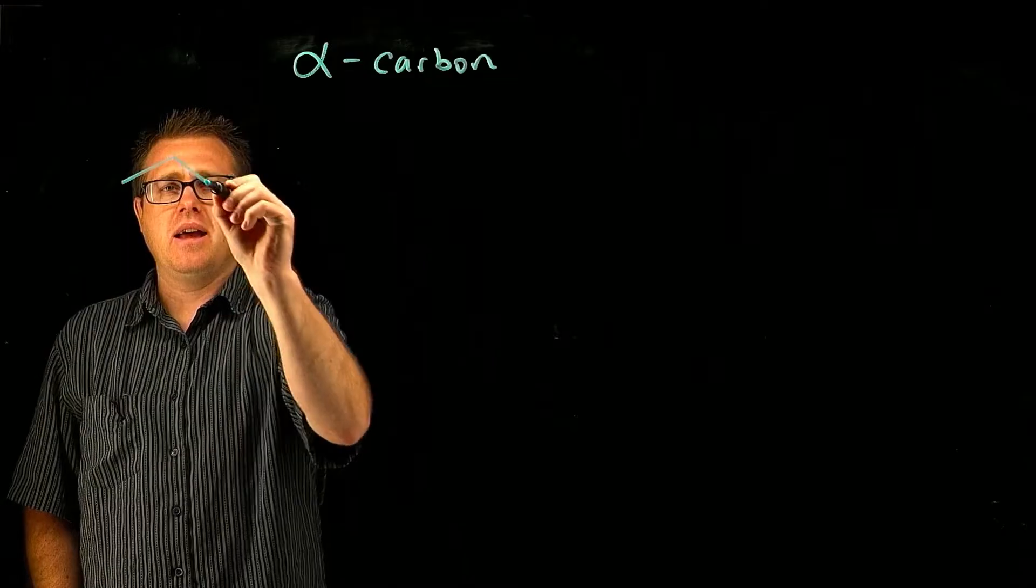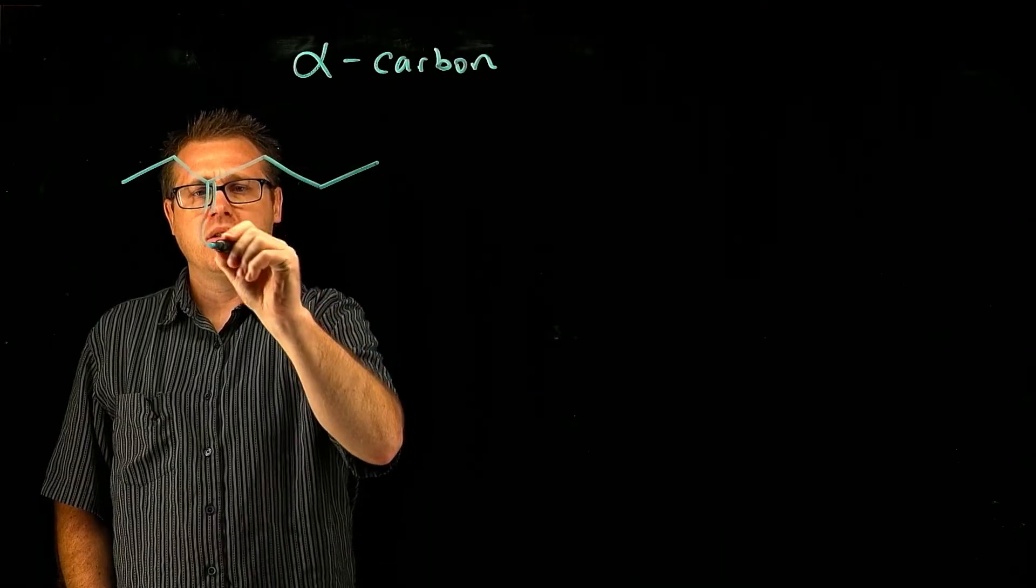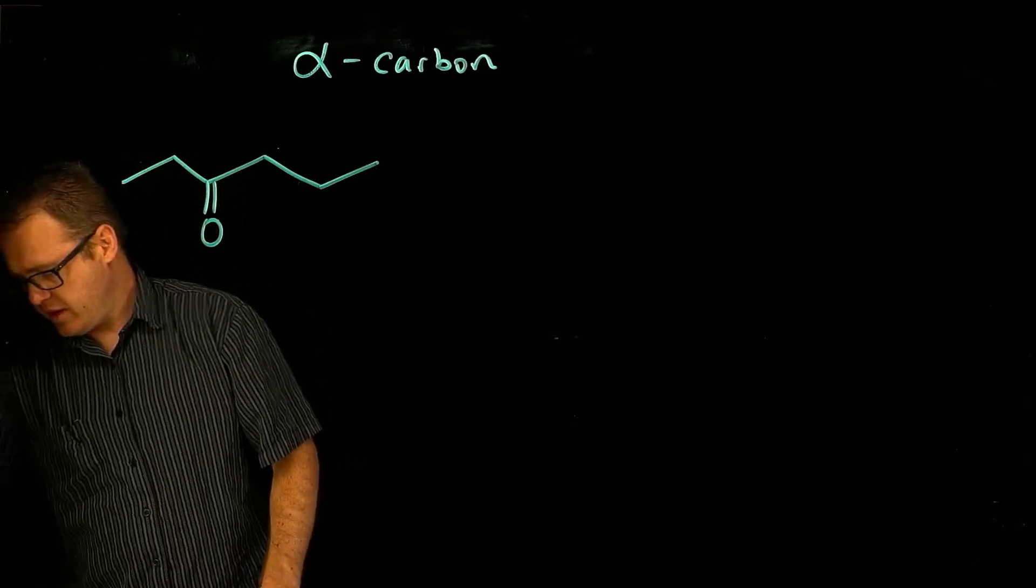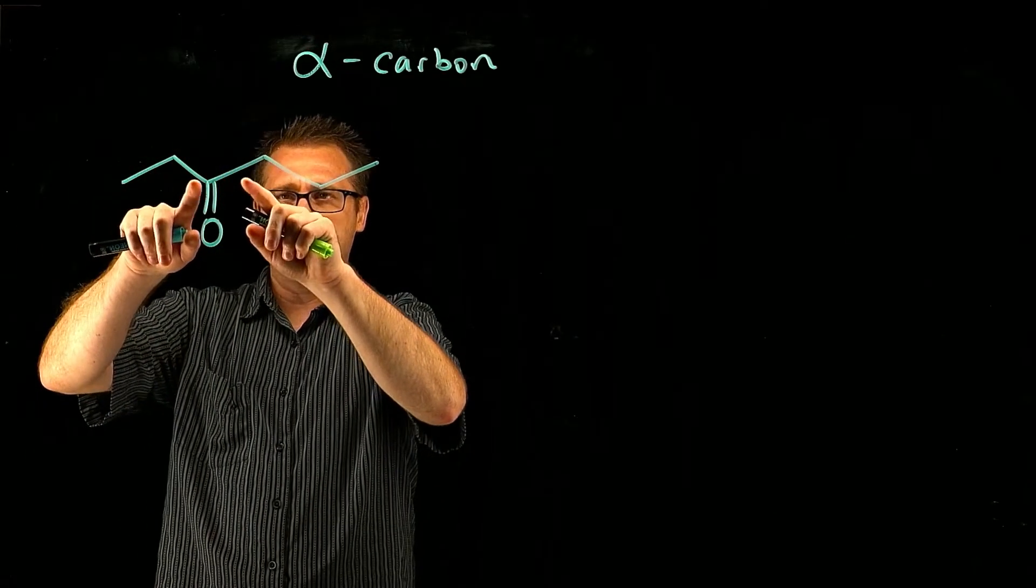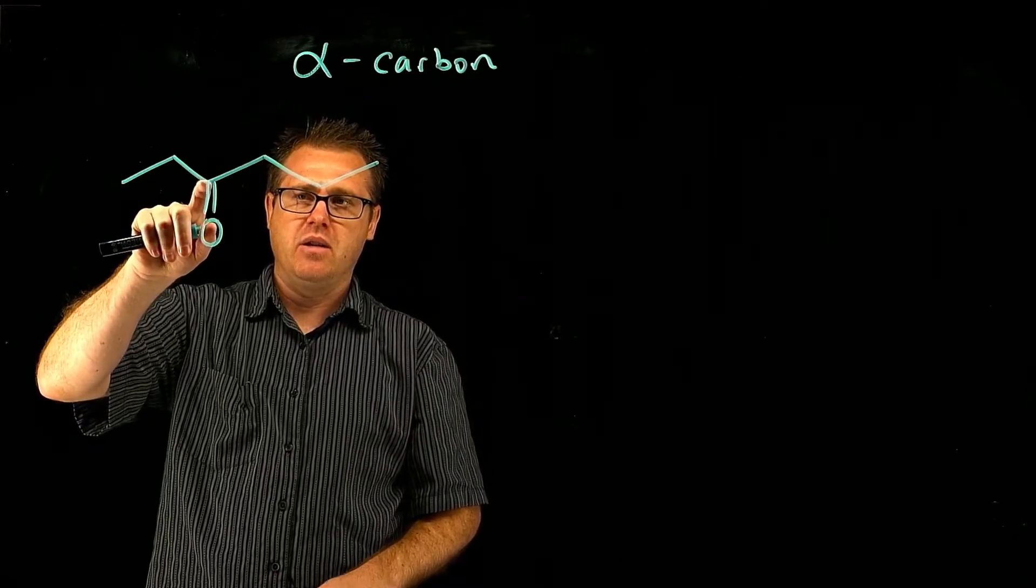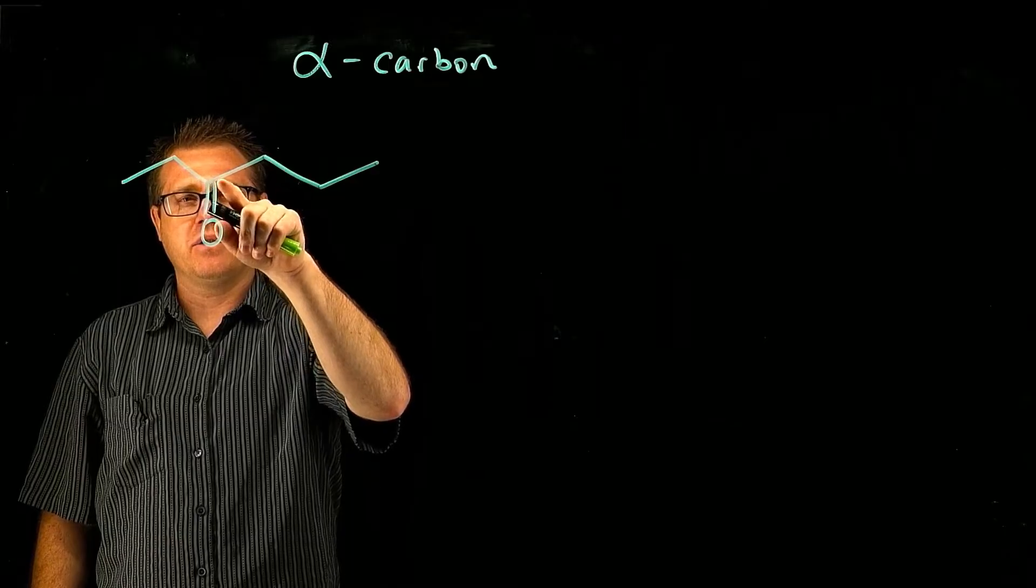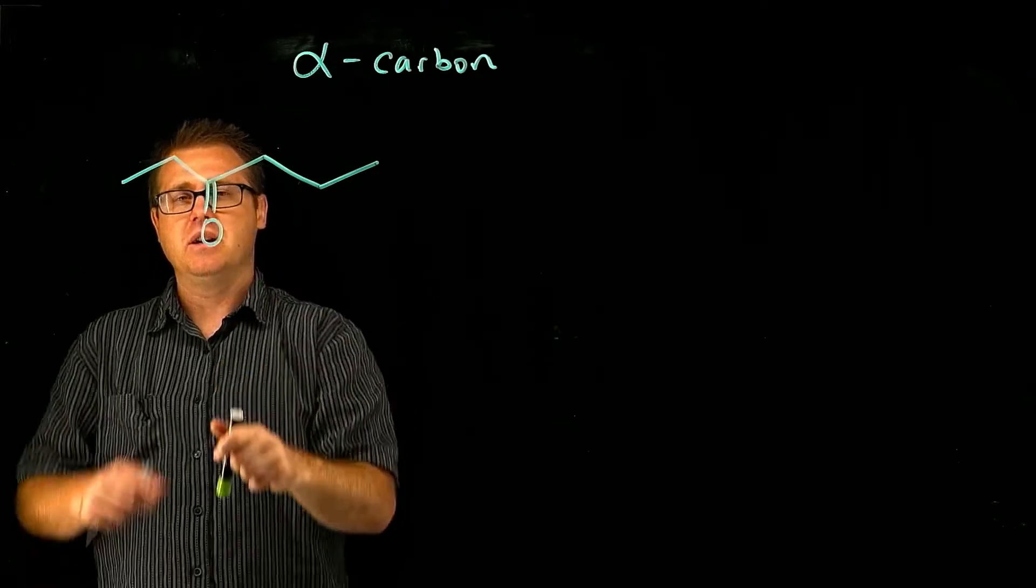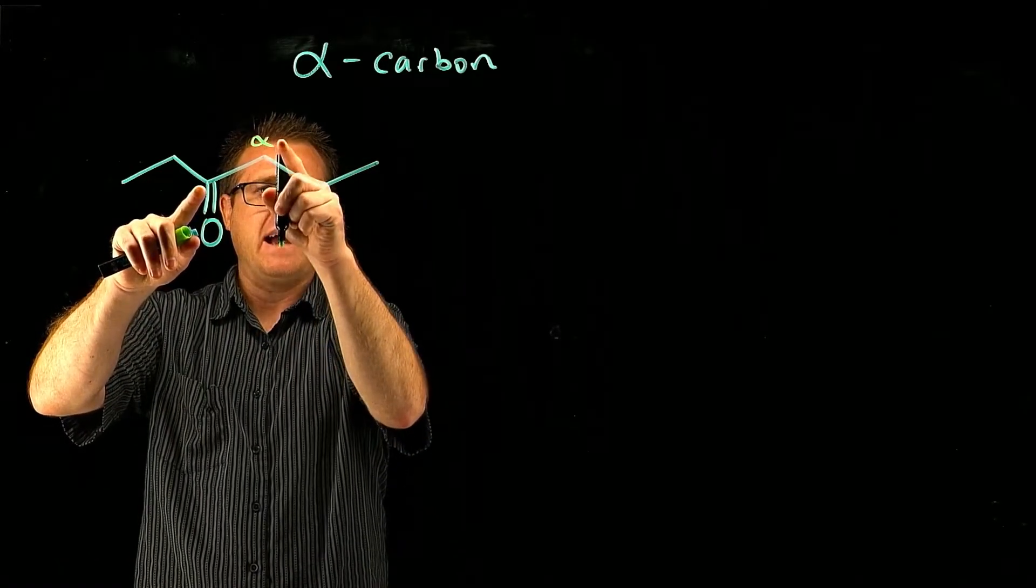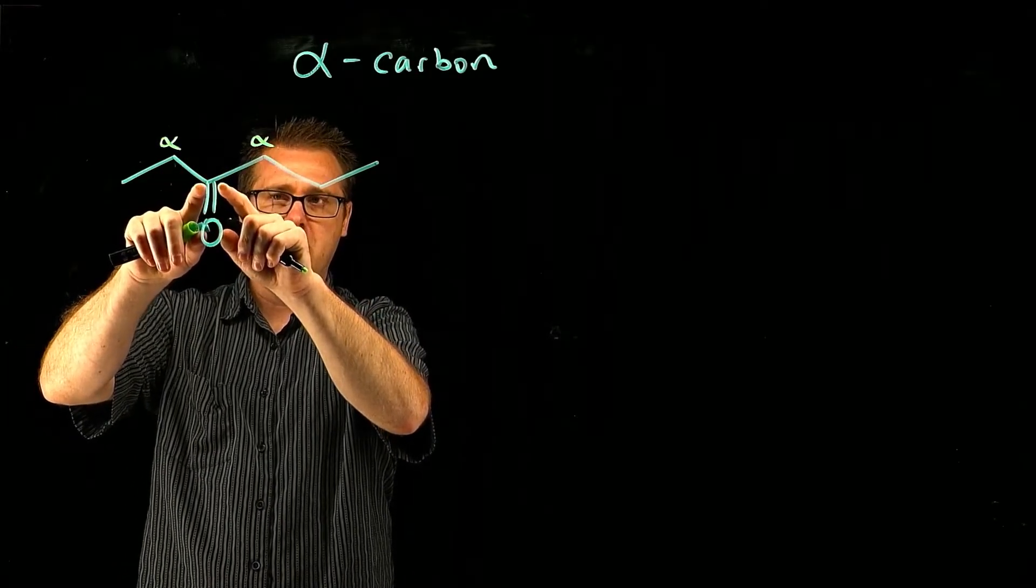So if we take and look at a structure that looks something like this, we have a ketone. We use the Greek alphabet to distinguish these carbons that are adjacent to, or that we're counting the carbons that originate from the carbonyl carbon. We have a carbonyl carbon and the ones that are directly attached to the carbonyl carbon are called alpha. So that one's alpha and that one's alpha because they're directly connected to the carbonyl.